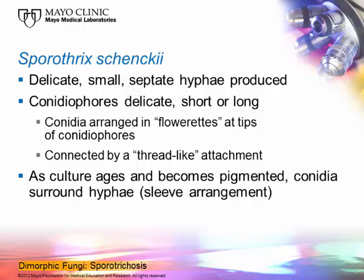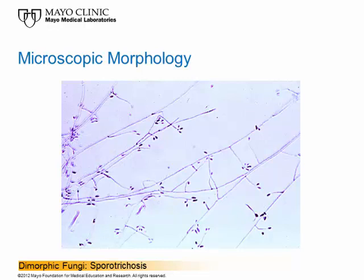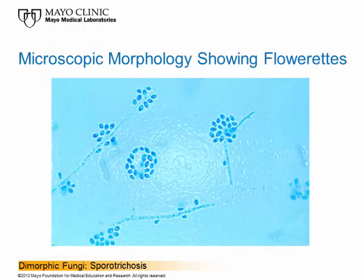At the tip of the conidiophores, you'll see three or four spores beginning to be produced, each connected by a thread-like attachment to the long conidiophore. In time, there'll be a cluster of those at the tip that we call a florette. You can see the long stalk — that's the conidiophore — and each of those spores is still connected to that long conidiophore by a thread-like attachment. Along the sides of the hyphae, you'll see aleurioconidia coming off — that's the beginning of the sleeve arrangement.